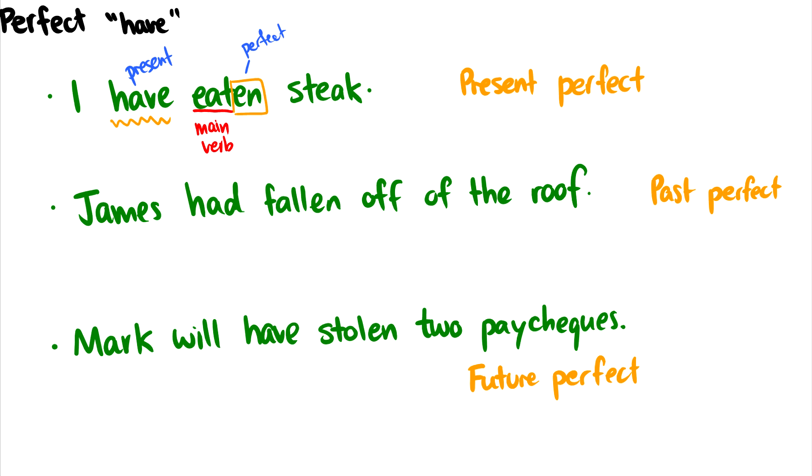In the second sentence, James had fallen off of the roof. This is the past perfect because, of course, had is in our past tense. And once again, we see fall is the main verb and it has this en morphology on the end of it.